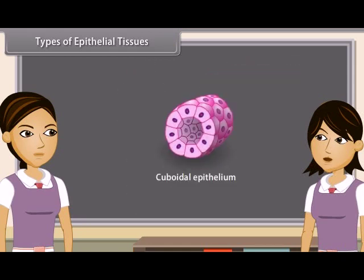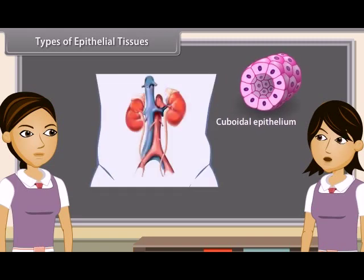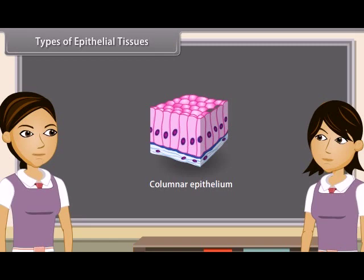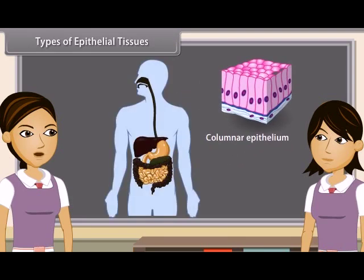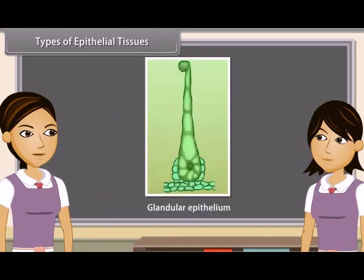In cuboidal epithelium, cells are cube-like. They appear square in section but appear hexagonal on free surface. It is found in kidney tubules, thyroid vesicles, salivary, sweat and exocrine glands. Columnar epithelium consists of cells which are pillar-like in appearance because they are taller than broader. Their nuclei are at the base. It is found in the lining of stomach, small intestine, colon, gallbladder and oviducts forming mucous membrane. Columnar epithelium is sometimes modified to form glands, converting into glandular epithelium.